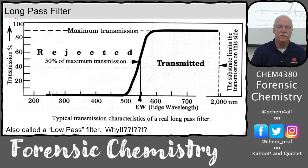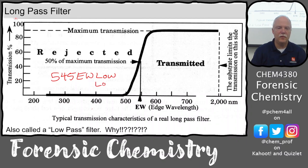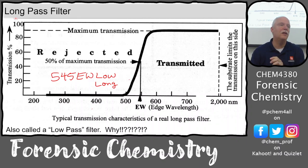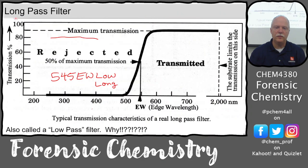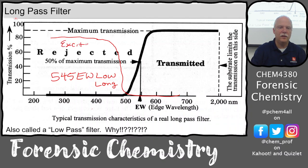Here's a long-pass filter — maybe 545 EW long. Wavelengths longer than 545 are passed; shorter ones are blocked. We could combine these two filters: the 480 short-pass as the exciter, and the 545 long-pass as the detector. The exciter drops off at 480, and the detector passes everything above 545. That gap between 480 and 545 is where your fluorescence emission falls.